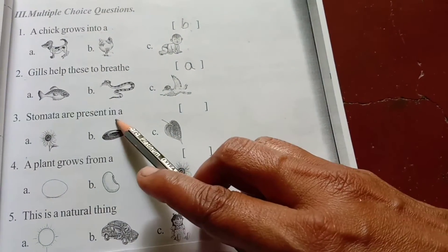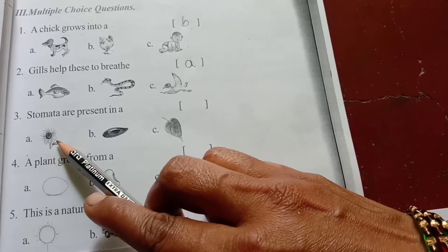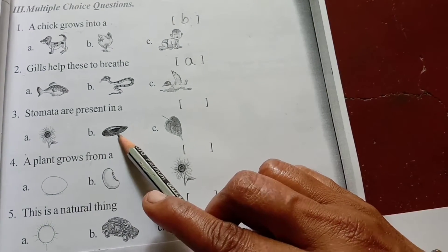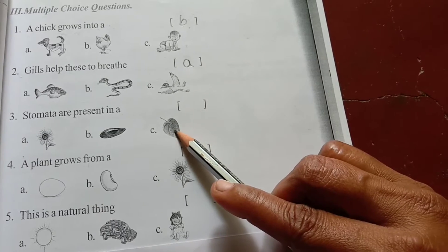Second. Stomata are present in a... First, sunflower. Second, seed. Third, leaf.